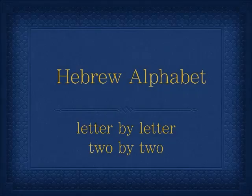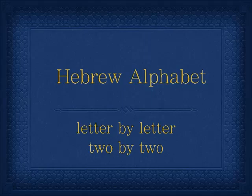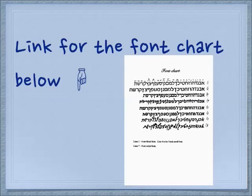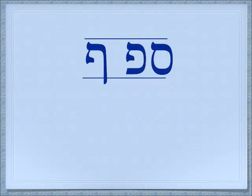Shalom. Today we're going to cover two more letters, a combination, and see what we find. You can still get a font chart if you click the link below. The two letters we're looking at today are Samech and Peh. Peh has two forms — they both have that little dangle hanging down from the front. The regular Peh fits on the line and the final Peh extends down below the line.